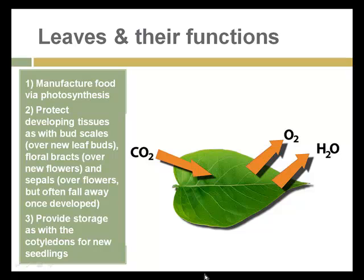Moving on to leaves, whose critical role is to manufacture food via the chloroplasts and the process of photosynthesis, which will be covered in more detail next week. Importantly, leaves also protect developing tissues such as bud scales, bracts — specialized leaves that cover new flowers — and sepals, which are leaves that cover flowers but often fall away once the flower opens and the fruit begins to develop.